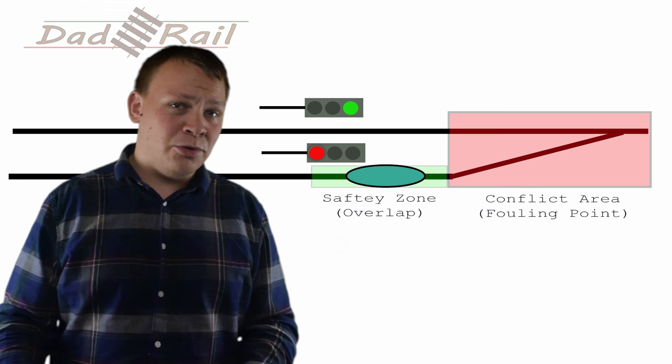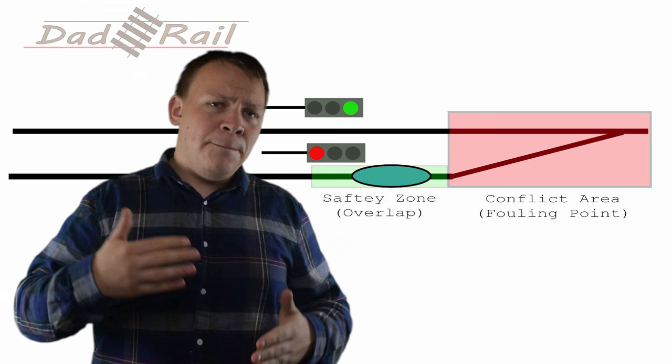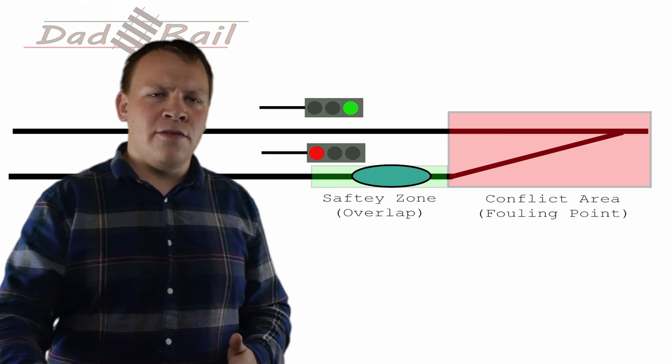For example, you could have a point where two lines converge, and beyond the signal there'd be an overlap before those two lines converge, and the train would be stopped in this overlap before it reaches a potential fouling point, or a potential conflict zone.